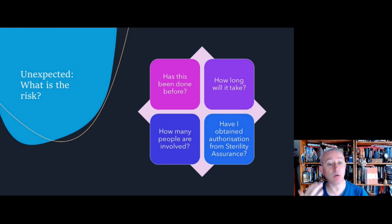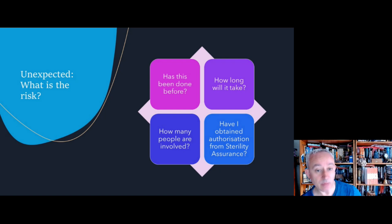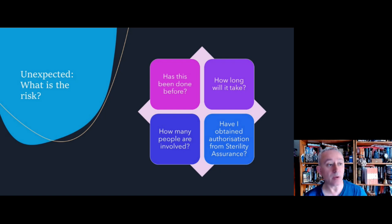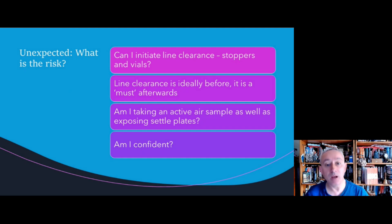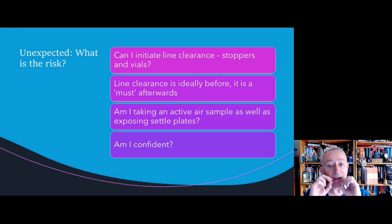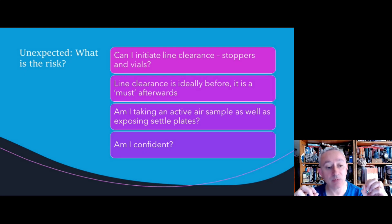If the intervention is not routine, have we obtained authorization in advance — either from sterility assurance or from microbiology 24/7 if sterility assurance is not available? We also need to consider whether we can initiate line clearance — and that's not just vials, that's stoppers as well. Ideally, line clearance should happen before the intervention, but if not, it must happen after. If line clearance is not possible, the intervention constitutes a greater risk.